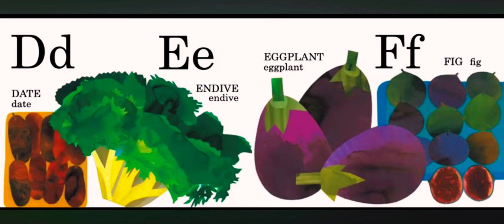D is for date. E is for endive. E is for eggplant. F is for fig.